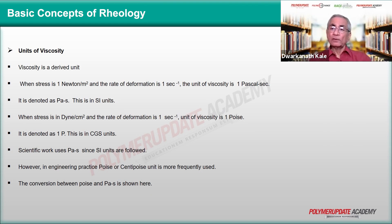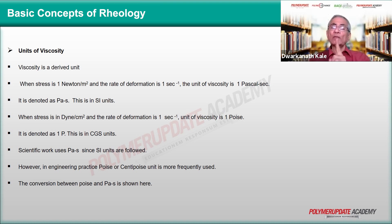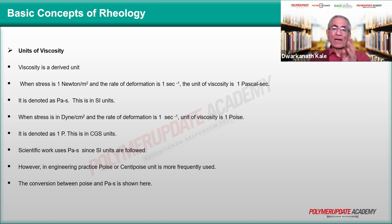When shear stress is one newton per meter squared and rate of deformation is one second inverse, the resultant unit is called one pascal second — because newton per meter squared is pascal, and when combined with second inverse it becomes pascal second.